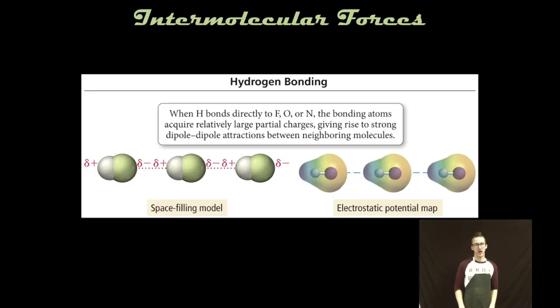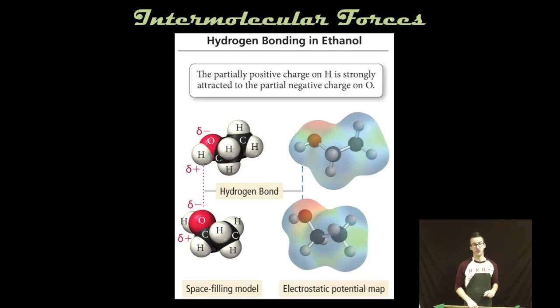So a classic example of hydrogen bonding exists between molecules of HF. Again, this is just a special type, a special strong type of dipole-dipole intermolecular force. And you can see this in any molecule in which a hydrogen is bonded to a fluorine, oxygen, or nitrogen. Those atoms do a really good job of pulling hydrogen's electron away, exposing the proton, and creating a relatively large partial positive region, which are then attracted to negative regions on neighboring molecules.